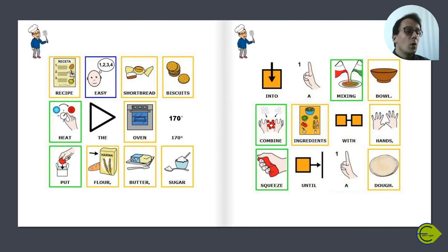Heat the oven to 170 degrees. Put flour, butter, and sugar into a mixing bowl. Combine the ingredients with your hands and squeeze until it forms a dough.